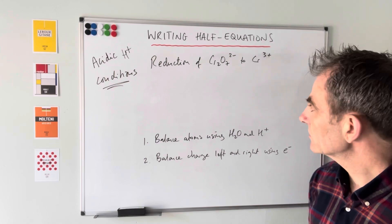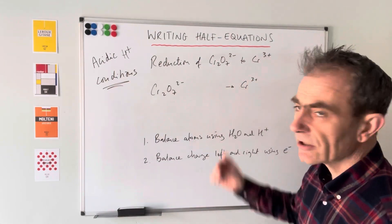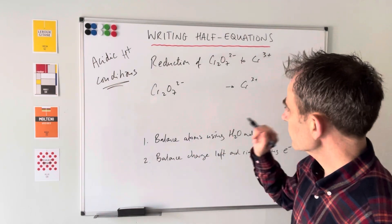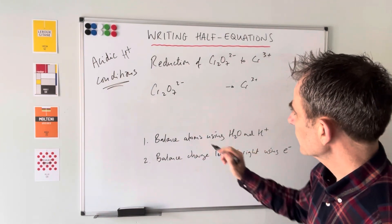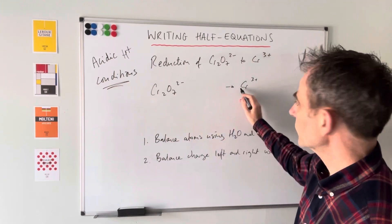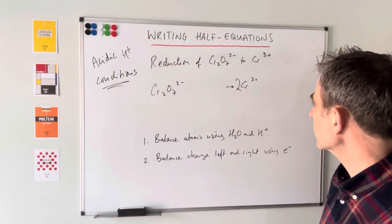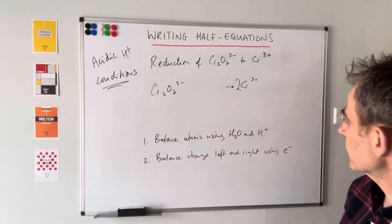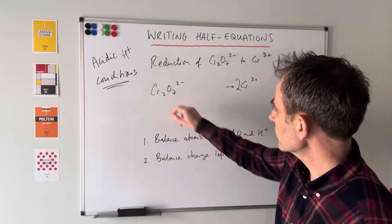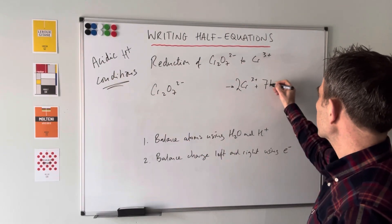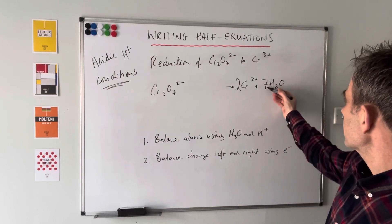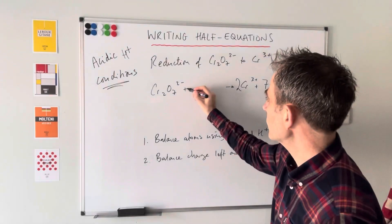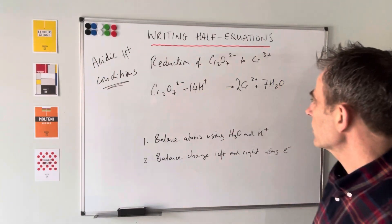So just like before, I've put in the beginnings of the equation and left space for other species. The first thing to do here is sort out the fact that we've got two chromiums on the left but only one on the right, so we need a two in front of the Cr3 plus before dealing with the water and H plus. Seven oxygens means seven H2O's.